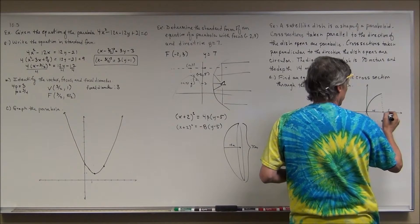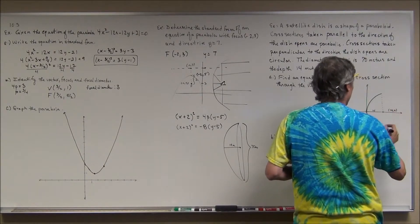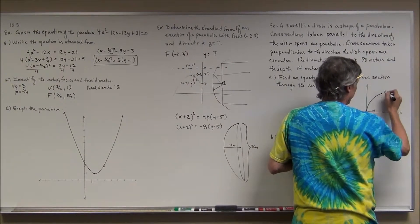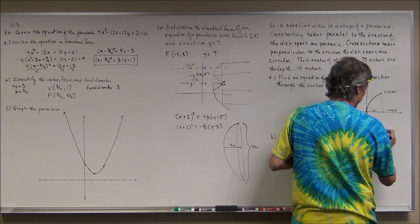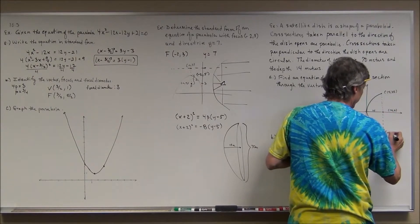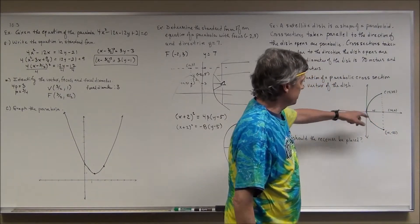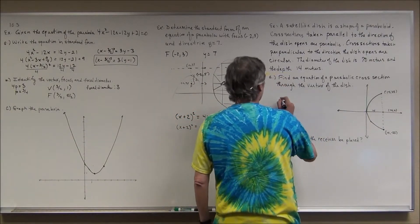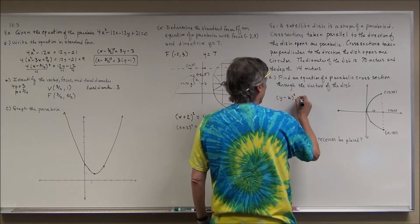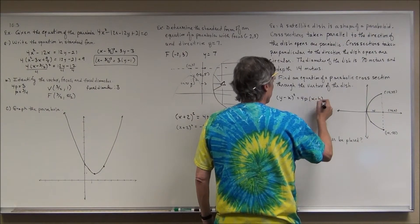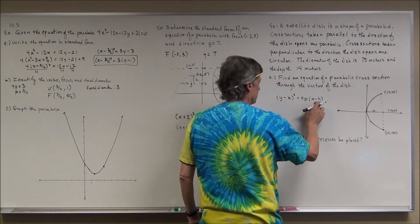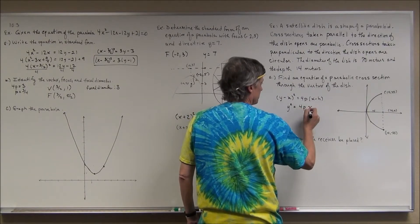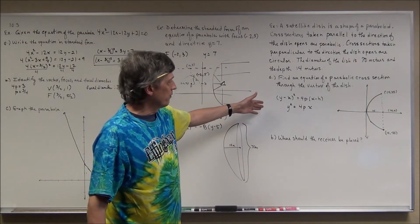The depth is 14, so the right edge of the dish is at x equals 14. The diameter is 70 meters, so the radius is 35 meters, meaning the points on the rim are at (14, 35) and (14, negative 35). With vertex at (0, 0) and opening to the right, the equation takes the form y² equals 4px. I just need to find p.